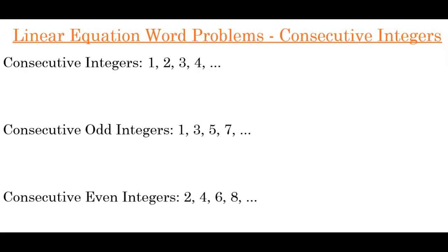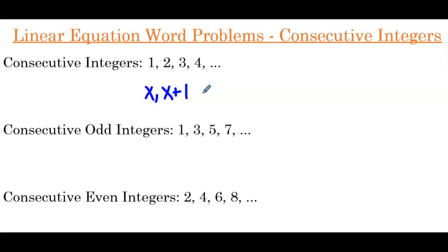So let's start with consecutive integers. An example would be the string 1, 2, 3, 4, etc. How would that equate to variables? So let's say we start by defining our first consecutive integer with x. Then the next consecutive integer is going to be x plus 1, because to get from 1 to 2 we add 1, and to get from 2 to 3 we add 1. So if our first integer is x, the next integer is going to be x plus 1.